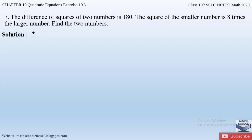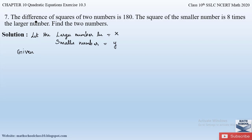First of all, let us assume: let the larger number be x, and let the smaller number be y. What is given in the question? The difference of squares of two numbers is 180, so the square of the larger number minus the square of the smaller number equals 180. So equation 1 is: x² − y² = 180.